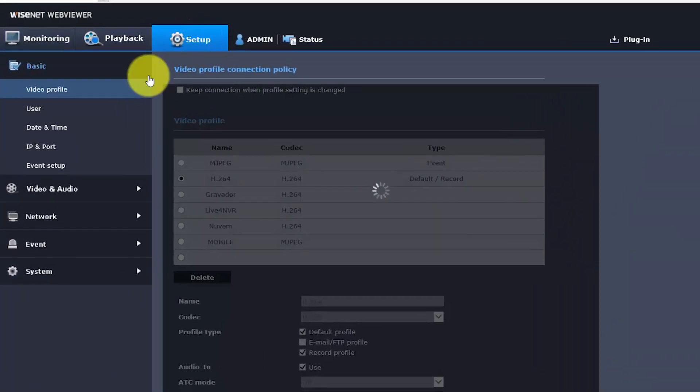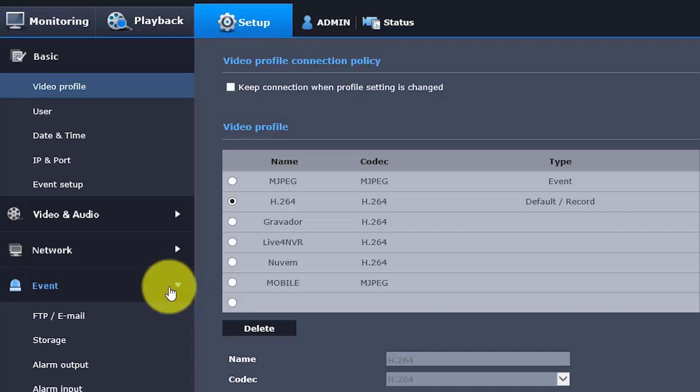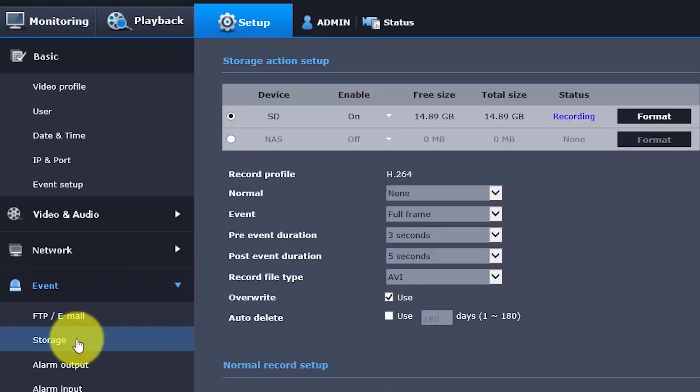So if I go to Setup, Event, I can find Storage. And then I find my SD card. It's enabled and it's recording. Of course, for your camera, it should be different. It should be a different menu, but the principle is the same. You must find your storage card and make sure that's recording.